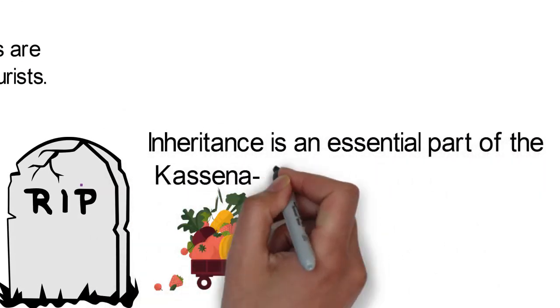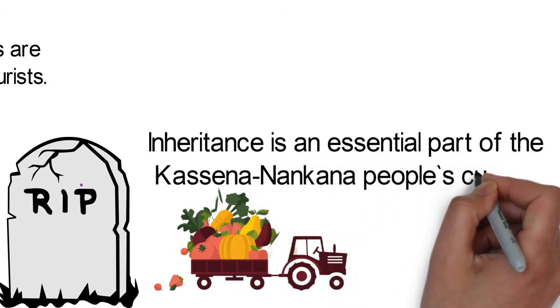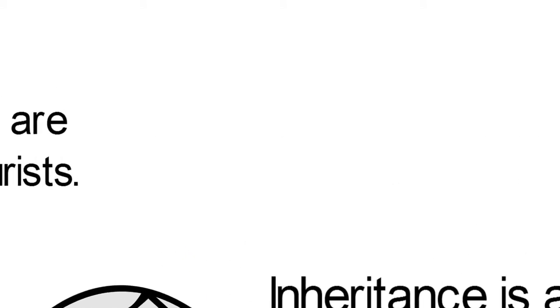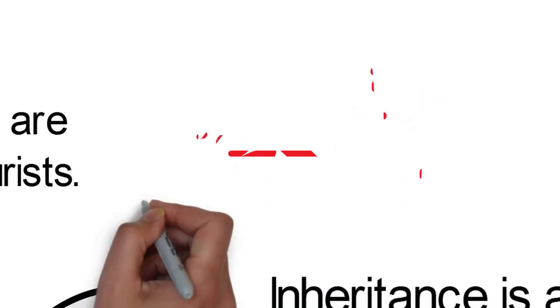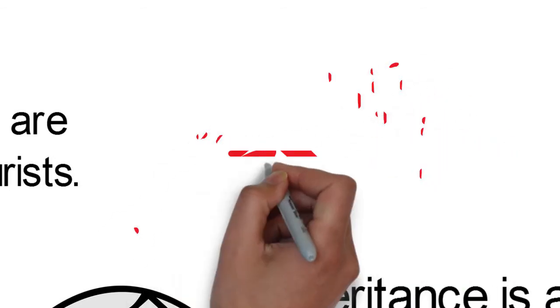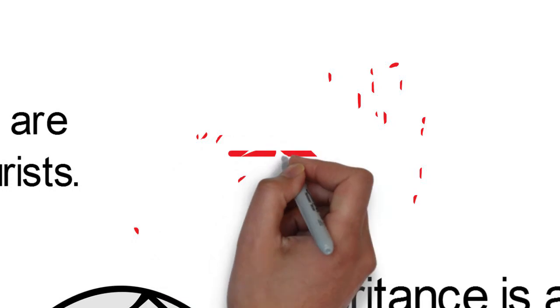Inheritance is an essential part of the Kasena Nankana people's culture. As they practice the patrilineal system of inheritance, daughters are never allowed to own family assets.